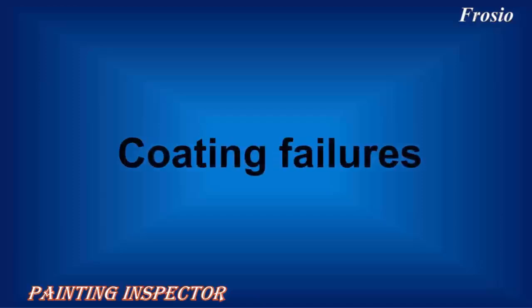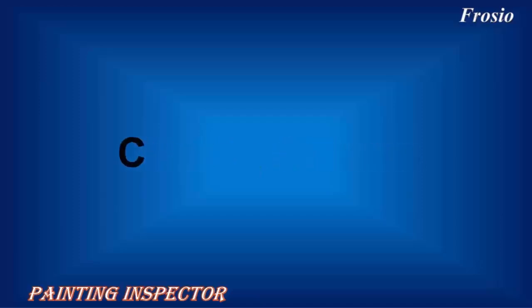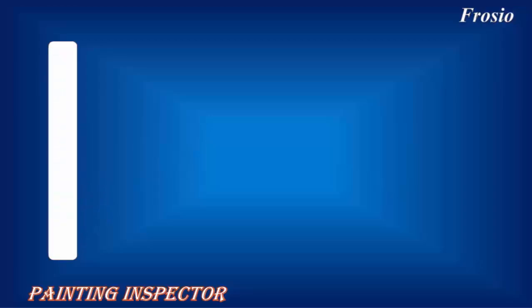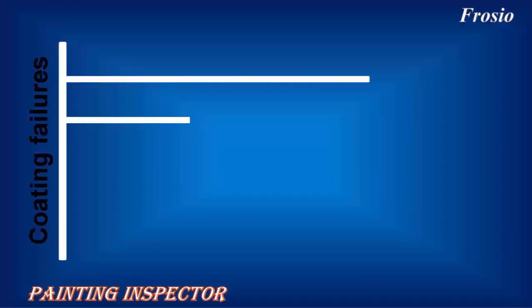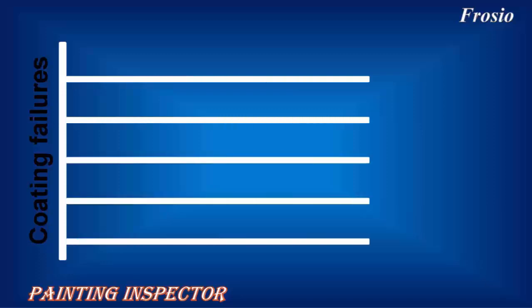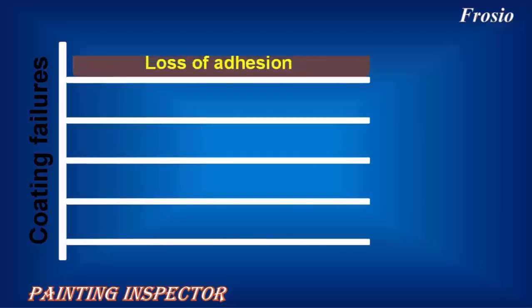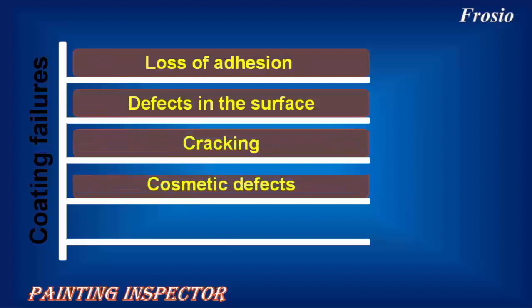Coating Failures. Failures or damages in the coating can be grouped under five headings: Loss of Adhesion, Defects in the Surface, Cracking, Cosmetic Defects, and Application Defects.